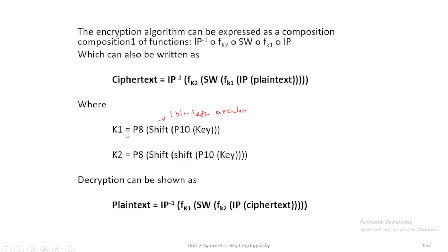For k2, after conversion of the shifting, the same concept is applied. If you take the original key, we should do the permutation, then the shifting is one bit left circular shift. Once again, we shift two bits, two bit left circular shift. After that, we are taking only 8-bit from the key. That was taken as k2.